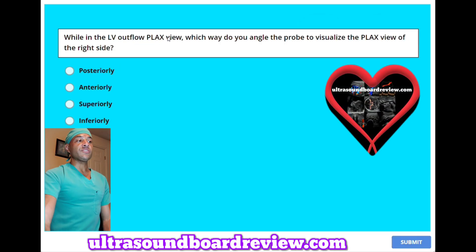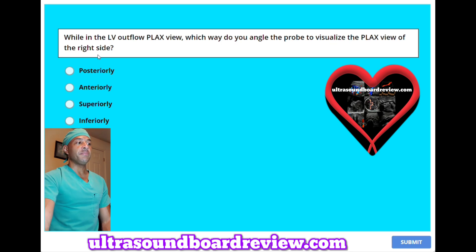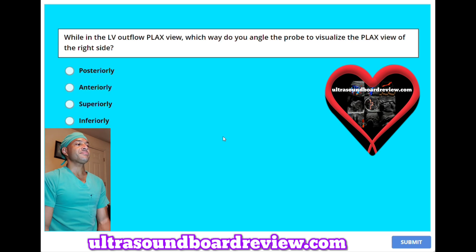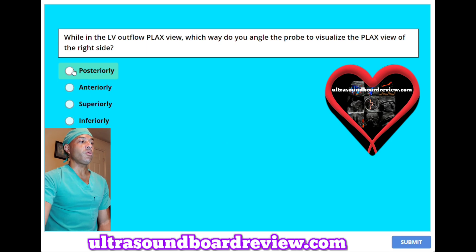While in the LV apical planes view, which way do you angle the probe to visualize the planes view of the right side? A, posteriorly. B, anteriorly. C, superiorly. Or D, inferiorly. The answer is A, posteriorly.